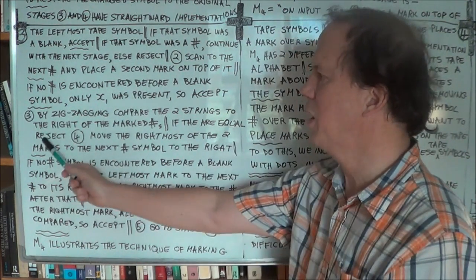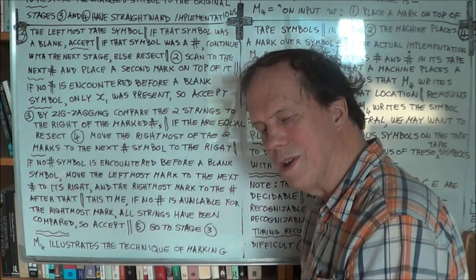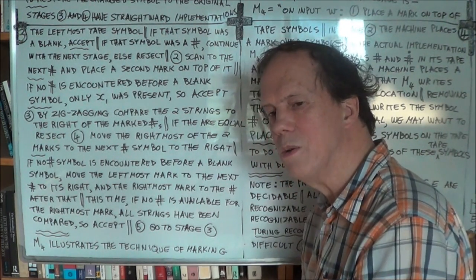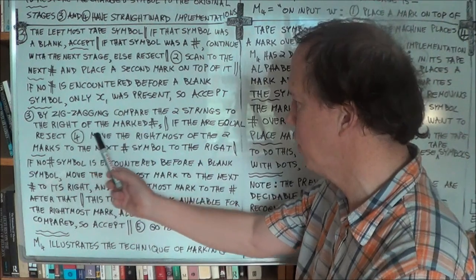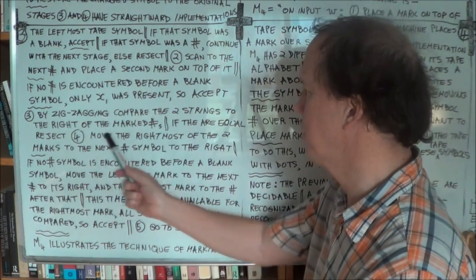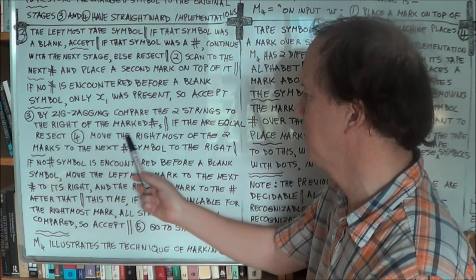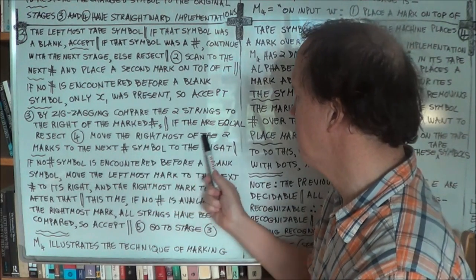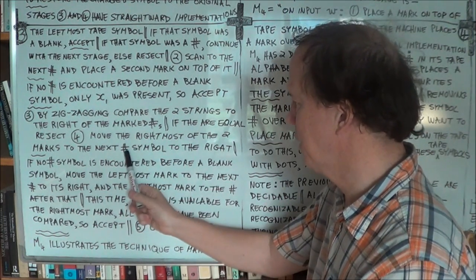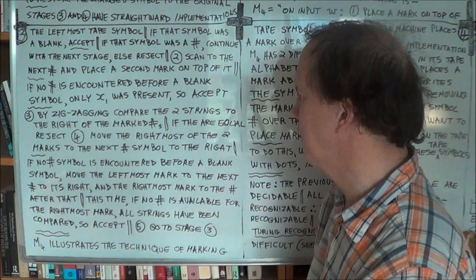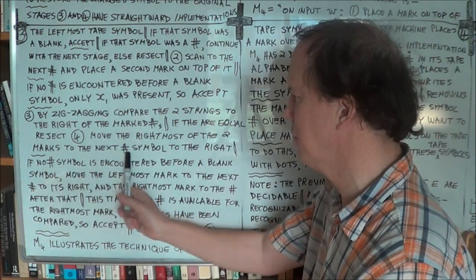If the two strings are equal, reject — because the whole point is you're trying to show all the strings are different from each other, so if any two are the same, reject. Stage four: you assume they're different so you haven't rejected. Now, move the rightmost of the two marks to the next hash symbol and mark it — to the next one to the right.